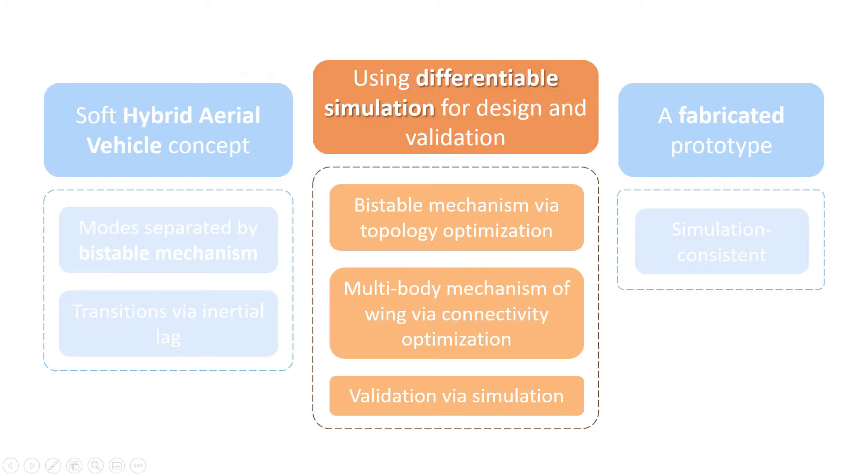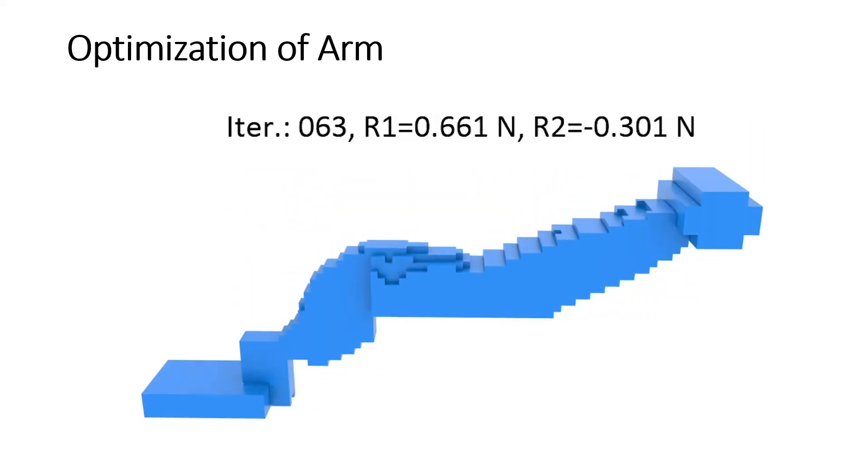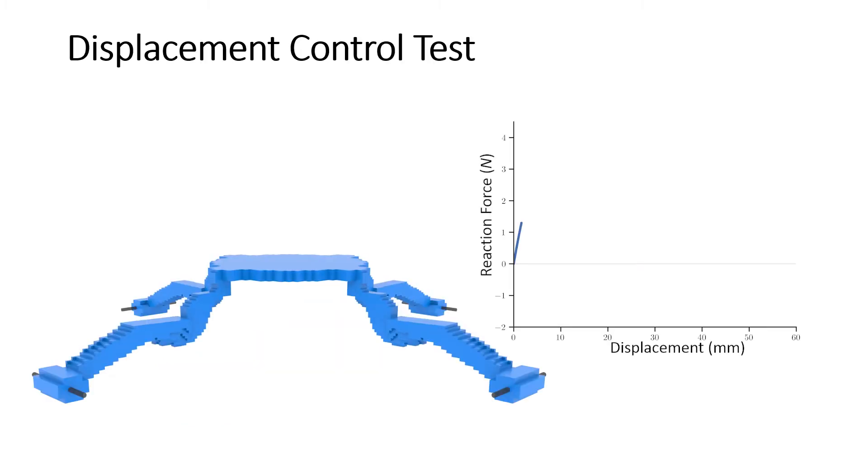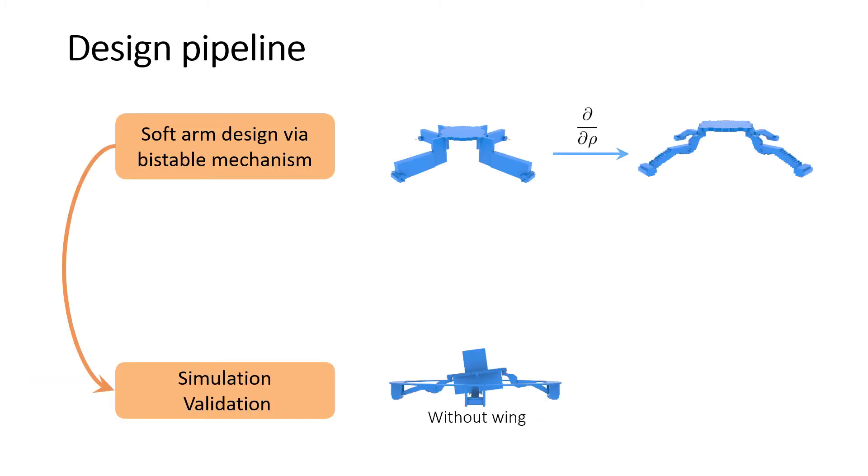Now, we introduce our design pipeline. A non-linear elastic topology is first optimized to obtain bistability. The arm density field and the evolution of the snap-through force in each direction is shown here. Quasi-static displacement control verifies the bistability. The system without wings is then tested with dynamic forward simulations to validate that the designed system can function properly in practice.